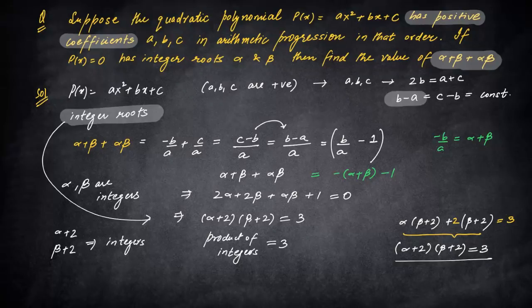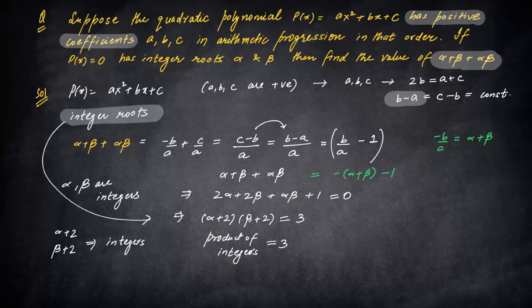α and β are integers. If this is the case, then α + 2 and β + 2 will also be integers. So you have product of integers equal to 3. Now your target is to find when this can happen. Notice many would think: what if it wasn't 3? Why was 3 given? It has significance. Because 3 is a prime number.